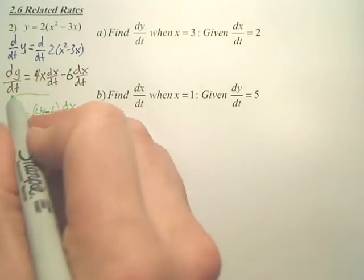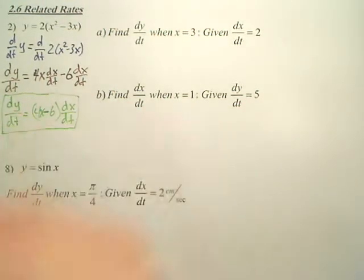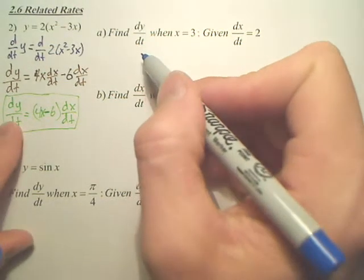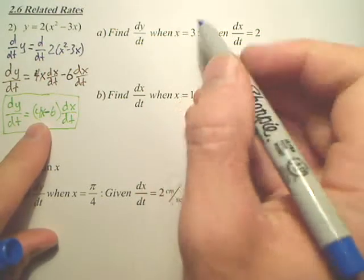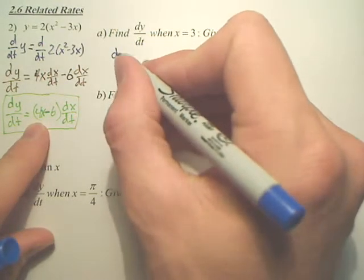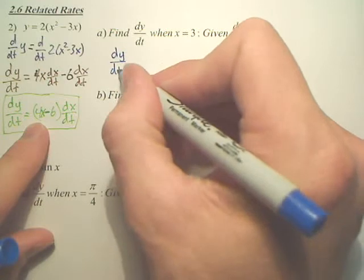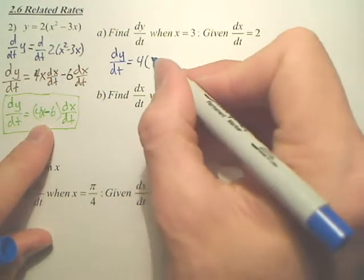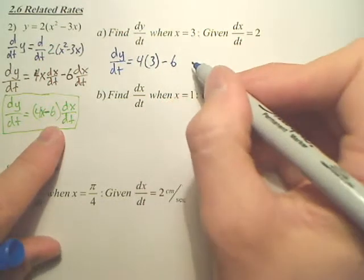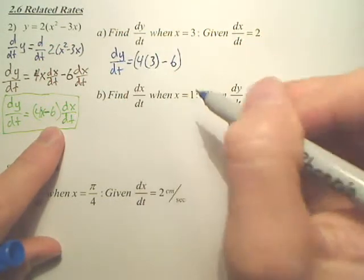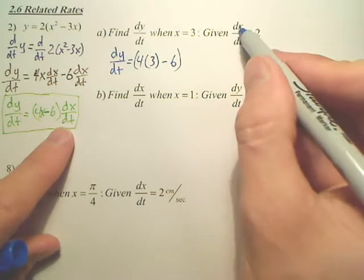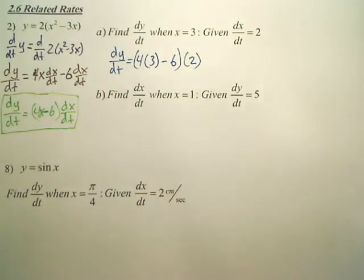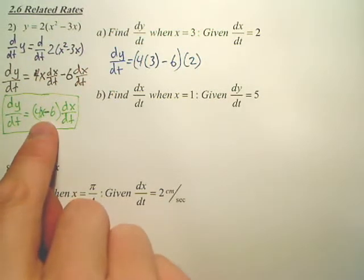Okay. This is my formula. I now plug in according to what they give me. I want to find dy/dt, so I want to find this. When x is 3, so if you use this equation, dy/dt equals 4 times, what's x? 3. Minus 6. And all of that times, what's dx/dt? 2. Now, it's kind of important you put it in parentheses, isn't it?